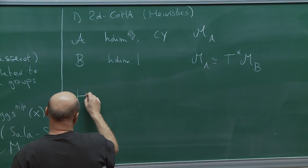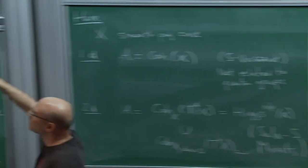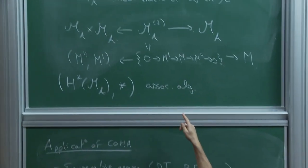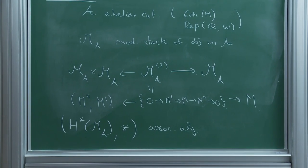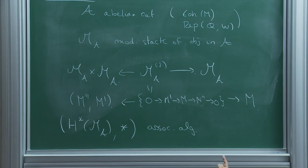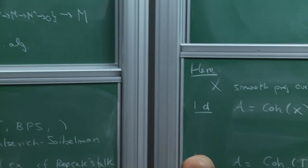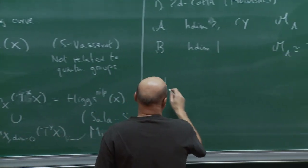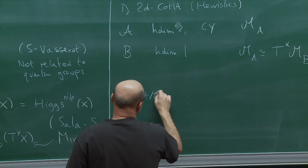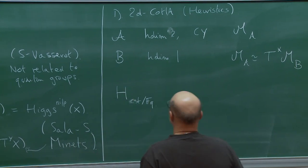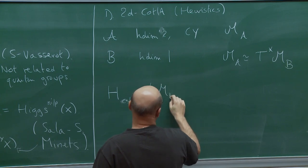Consider another type of Hall algebra. Instead of taking the cohomology of the moduli stacks, one could take F_q points of these moduli stacks and take functions. We can define exactly the same construction, and let me denote this by the constructible Hall algebra over F_q of M_B.